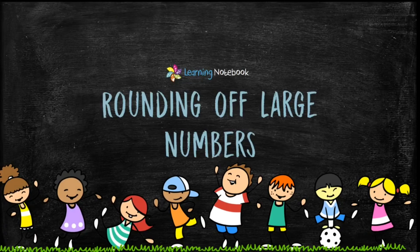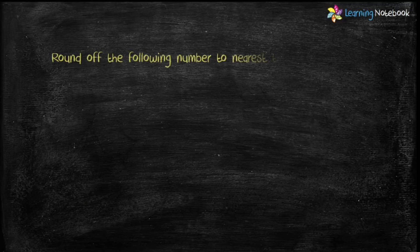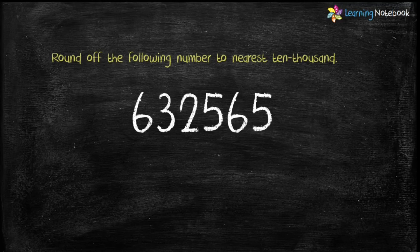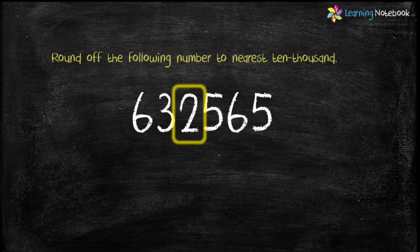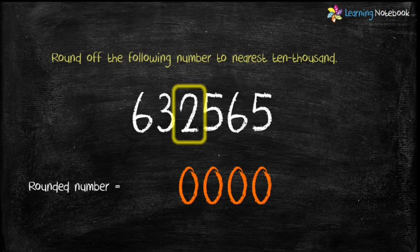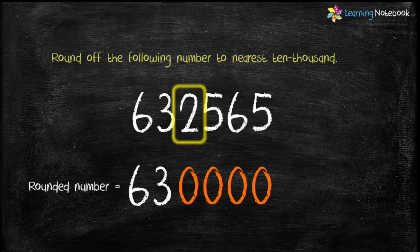Now let's understand rounding off large numbers. Round off the following number to the nearest 10000. The steps remain the same except we will now look at the thousands place. Here the thousands digit is 2, which is less than 5. Therefore replace 2565 by 0 and keep the remaining digits as they are. The rounded number is 630000.